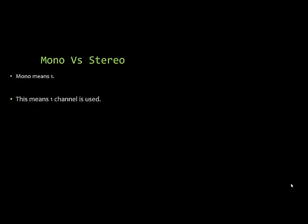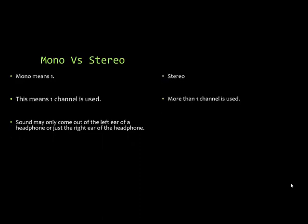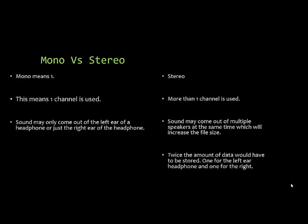Mono means one channel is used. If you're listening to a song in headphones in mono, it comes out of either the left or right headphone. Stereo means more than one channel is used — surround sound uses five, six, or even seven channels plus a subwoofer. Sound may come out of multiple speakers simultaneously, which increases file size. In stereo, you store data for both left and right channels, literally doubling the file size.